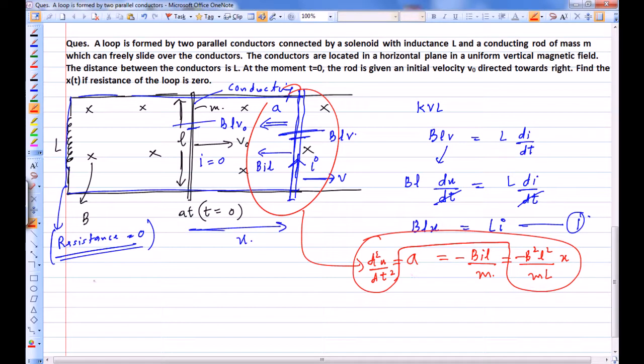So we can say x as a function of t is going to be A sin(ωt), where ω is going to be BL over √(mL), or rather your ω is going to be BL over √(mL) times t plus φ₀.